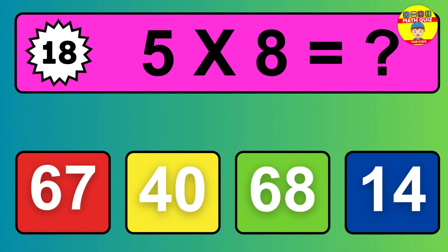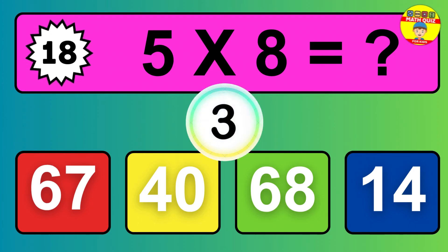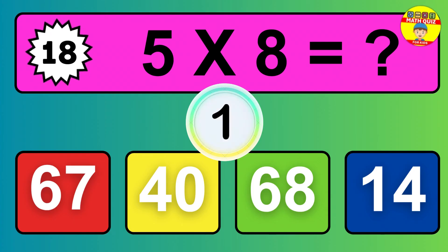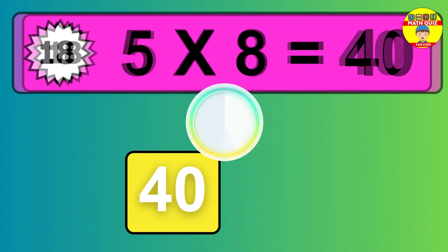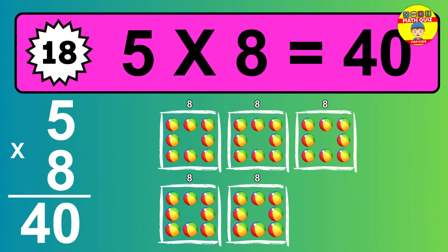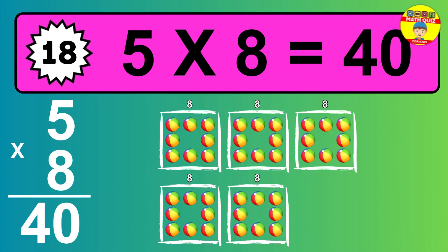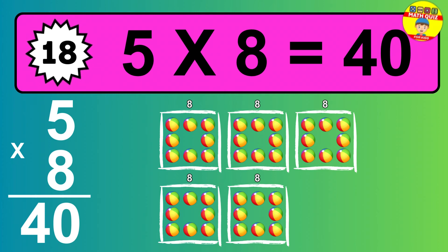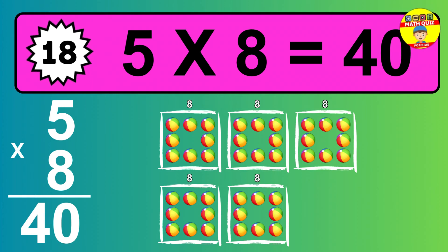Question 18. Five times eight equals what? The answer is five times eight is forty. To calculate, we have five groups with eight balls each one. So how many balls do we have? Forty balls.